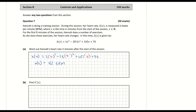Part b: find h dash of x — that's asking me to find the derivative of h. Let's write out the original function first; it's good practice. The function is 2x cubed minus 28.5x squared plus 105x plus 70.